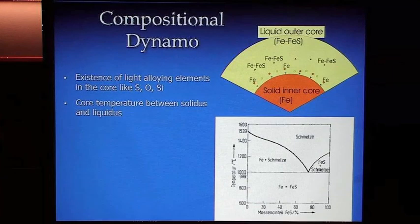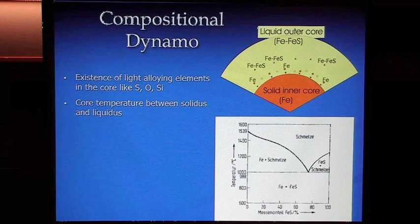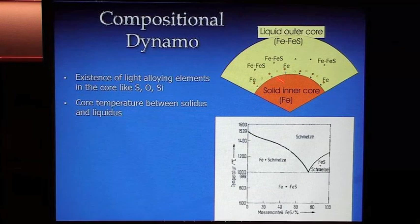For example, the light element may preferentially partition into colder regions of the inner core compared to warmer regions relative to the melting temperature. The importance of this compositional dynamo is that it provides a mechanism for stirring the outer core and making the convection that drives the geodynamo through motion of the metallic alloy of the outer core.